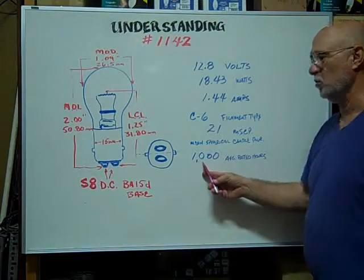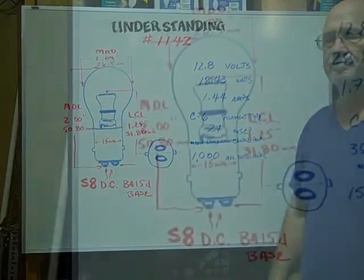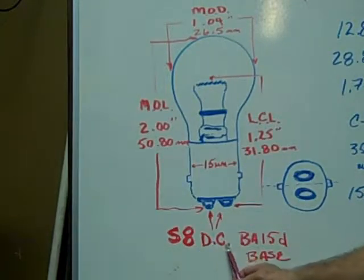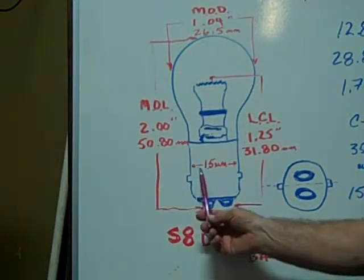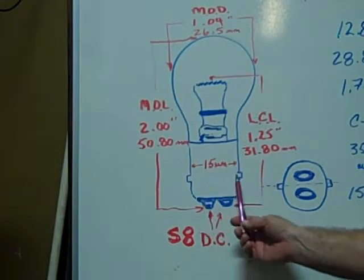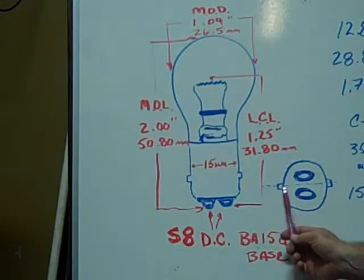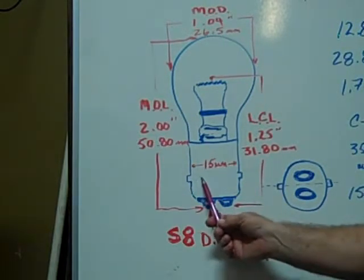The average rated hours are 1000 hours. The S8 DC or dual contact BA-15D base miniature bulb has a base diameter of 15 millimeters and the pins are 180 degrees from each other on either side of the base.